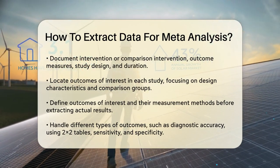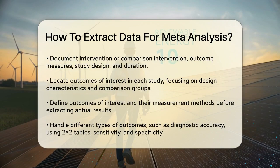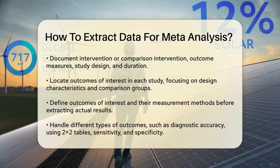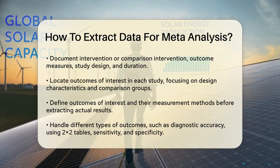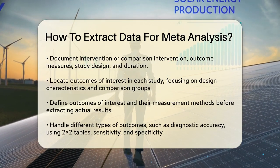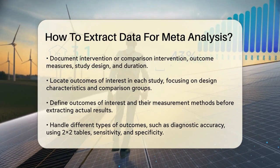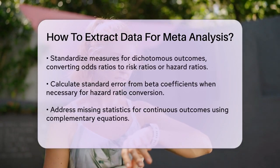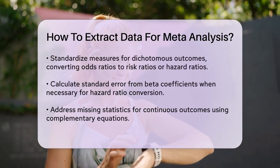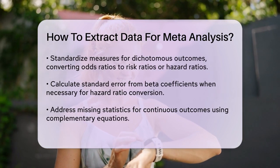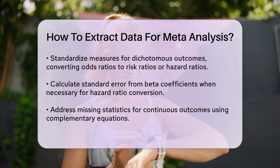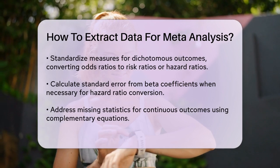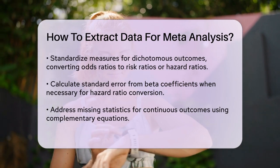For example, if the sensitivity or specificity is not reported, you might need to use other statistics or assumptions to estimate these values. For dichotomous outcomes, you may encounter studies that report measures of risk on different scales. You need to standardize these measures, such as converting odds ratios to risk ratios or hazard ratios. If a study reports a beta coefficient instead of a hazard ratio, you'll need to calculate the standard error of the beta coefficient to convert it into a hazard ratio.